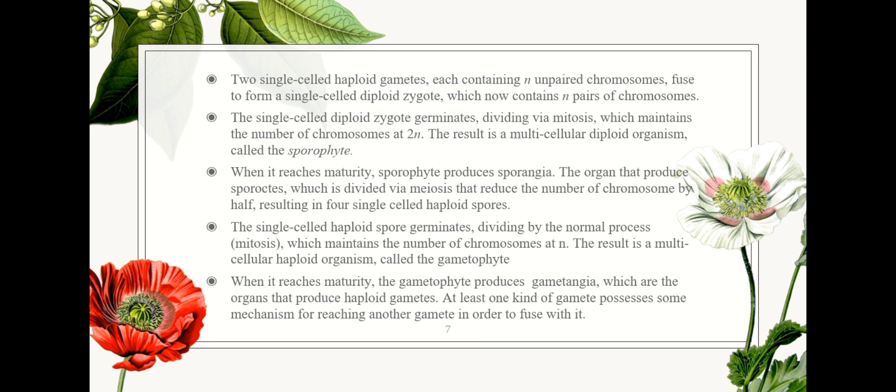The alternation of generations has fundamental elements. First, two single-celled haploid gametes, each containing N chromosomes, fuse to form a single-celled diploid zygote which now contains 2N chromosomes. Second, a single-celled diploid zygote germinates, dividing via mitosis which maintains the number of chromosomes at 2N. The result is a multicellular diploid organism called the sporophyte.